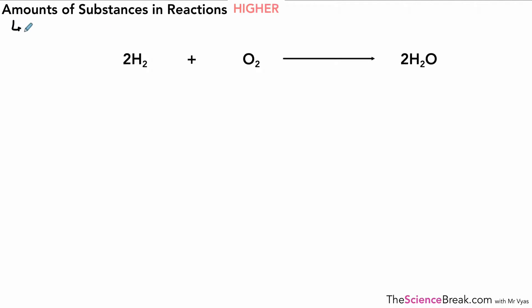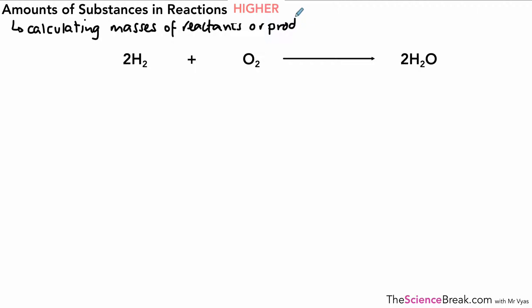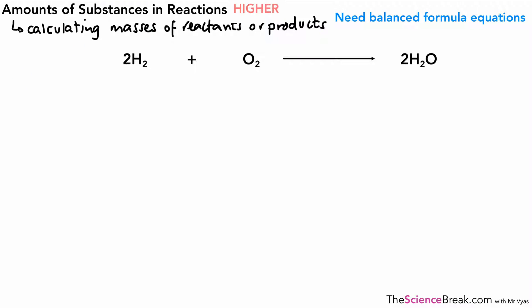Hello, today we're looking at amounts of substances in chemical reactions. We're going to be calculating masses of either reactants or products in chemical reactions. We do need to have balanced formula equations in order to do this, and here we've got an example of one of those reactions. We've got hydrogen reacting with oxygen, and that will give us water — and we can see that's balanced.